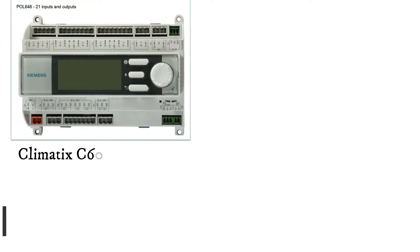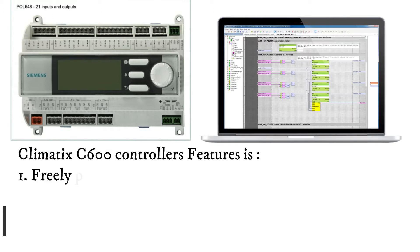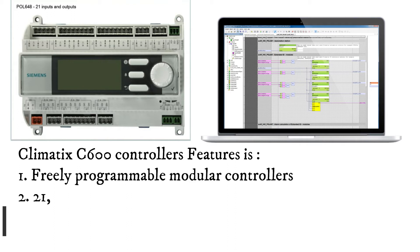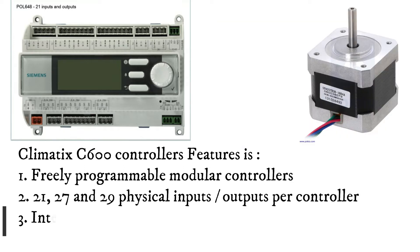Climatix C600 Controllers features include: 1. Freely programmable modular controllers. 2. 21, 27, and 29 physical inputs/outputs per controller.